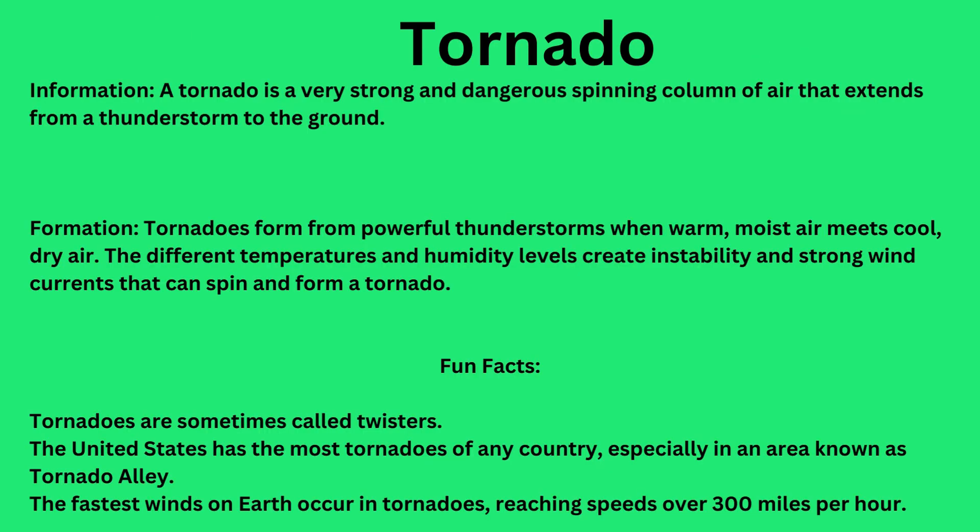Tornado. A tornado is a very strong and dangerous spinning column of air that extends from a thunderstorm to the ground. Tornadoes form from powerful thunderstorms when warm, moist air meets cool, dry air. The different temperatures and humidity levels create instability and strong wind currents that can spin and form a tornado.